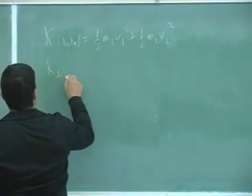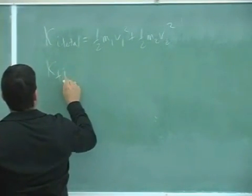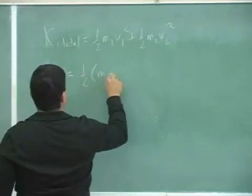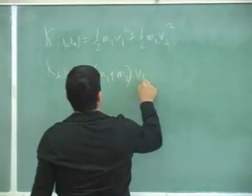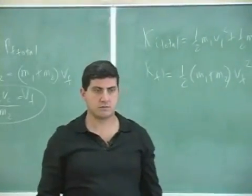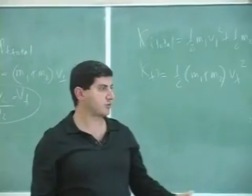And then the final kinetic energy is equal to half times the total mass times V final squared. Half times the total mass times V final squared.